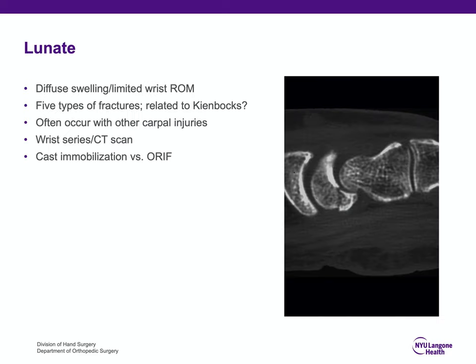The lunate is also not a very common carpal bone fracture. A high index of suspicion would be required to diagnose a lunate fracture. After a fall onto an outstretched hand or wrist, there would be diffuse swelling and limited range of motion. There is a classification with five types of lunate fractures, and it's unclear if the lunate fracture is related to Kienböck's disease.